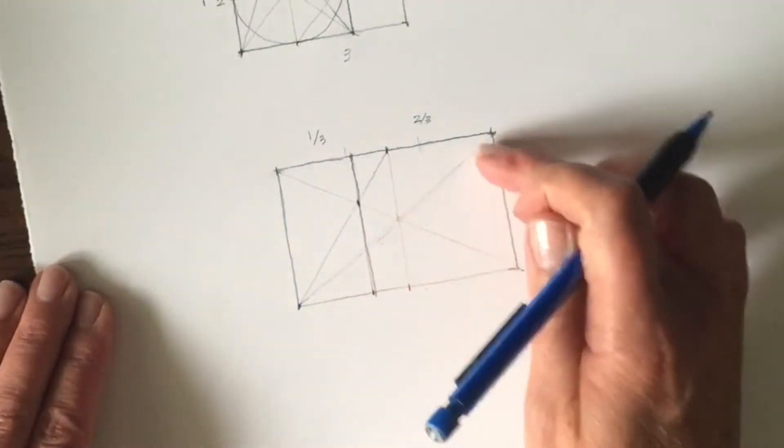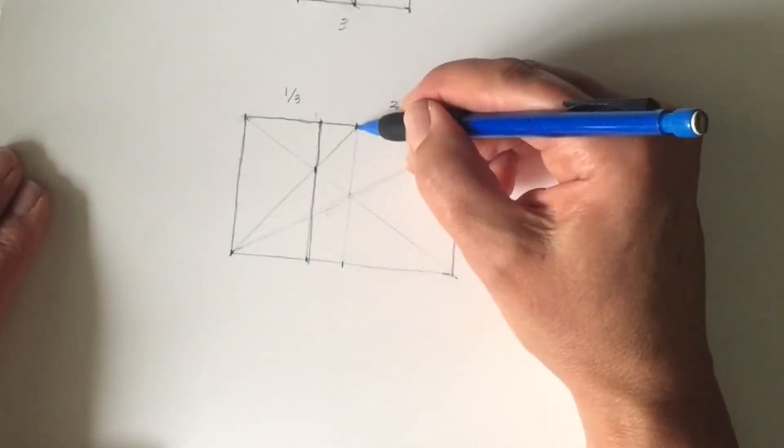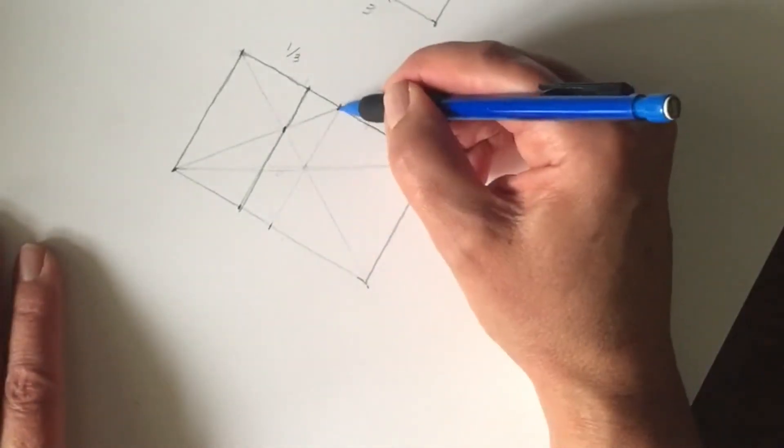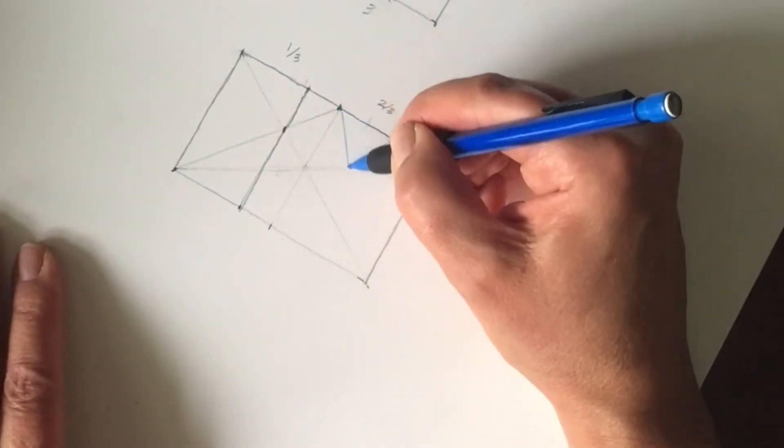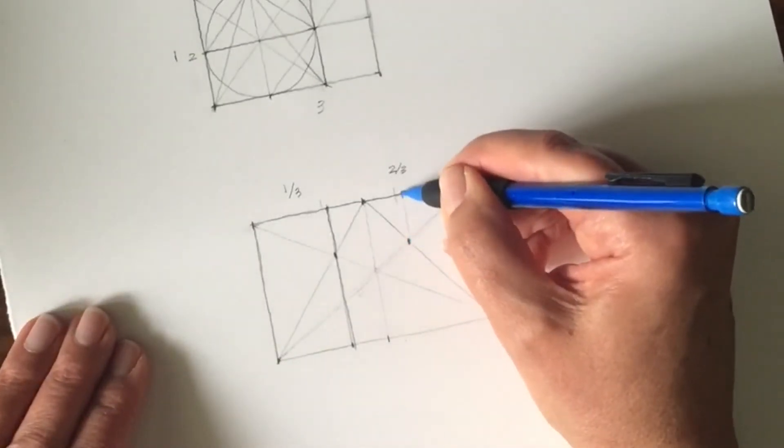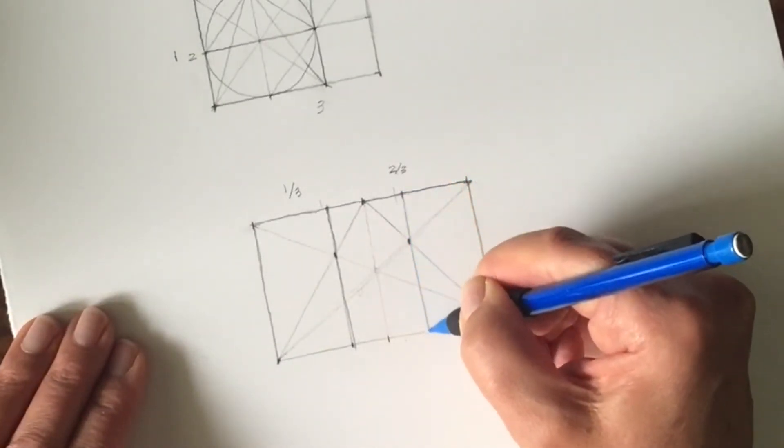So now we have to break this one into two thirds. We can just do the exact same thing but we'll repeat it on the opposite side, go from this point to the opposite corner. And where it hit the diagonal, that's your next third over here.